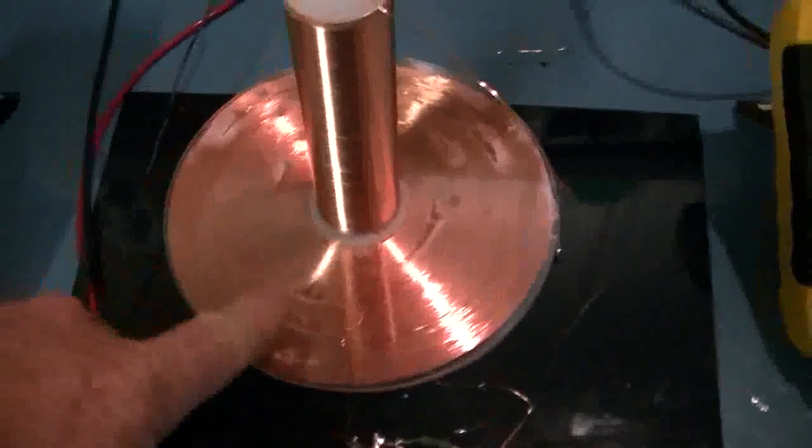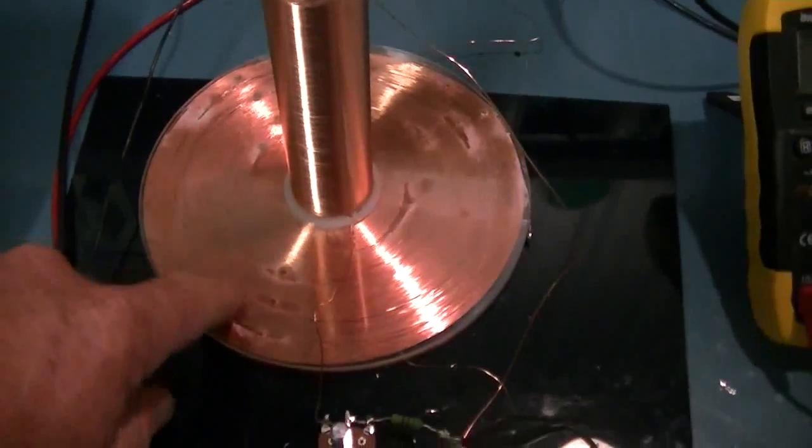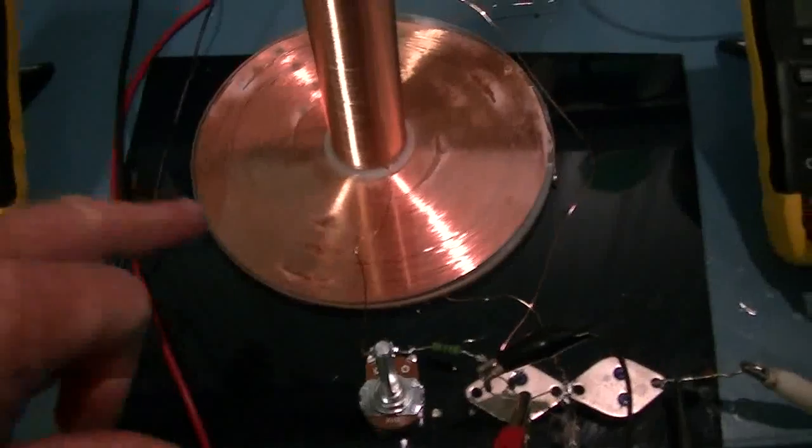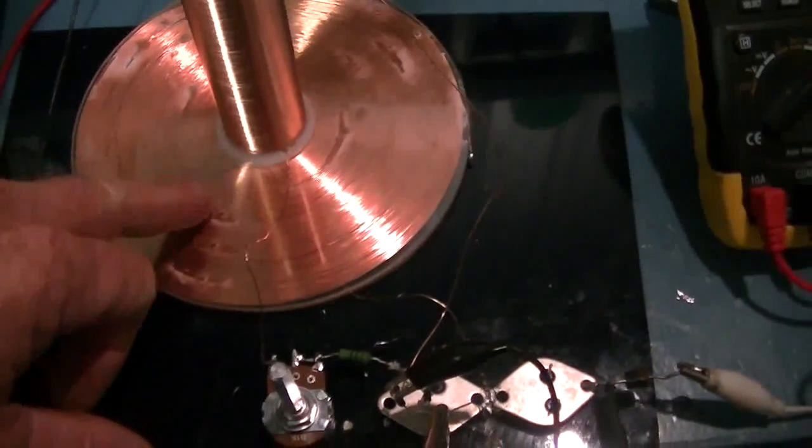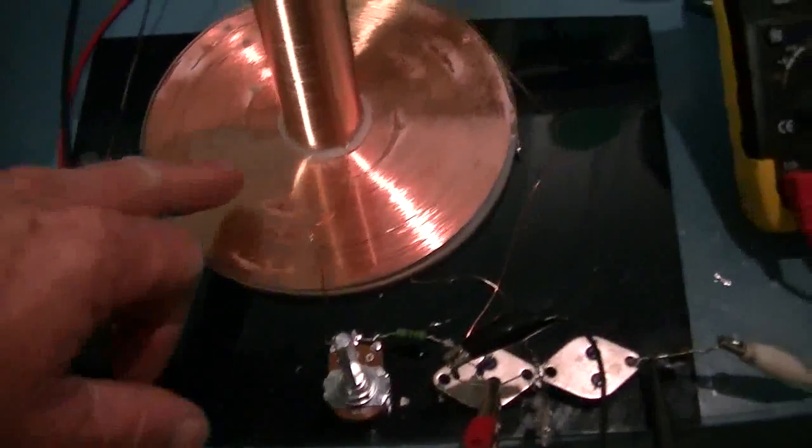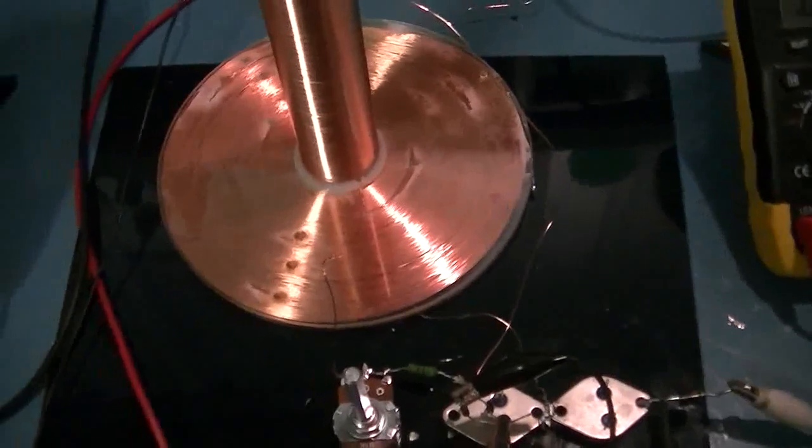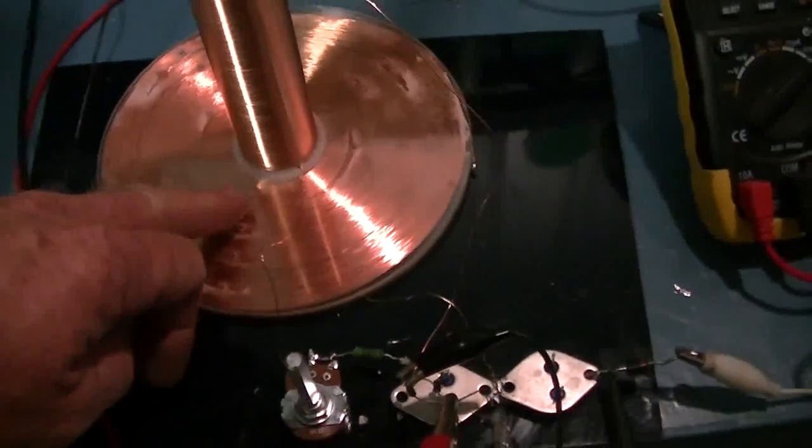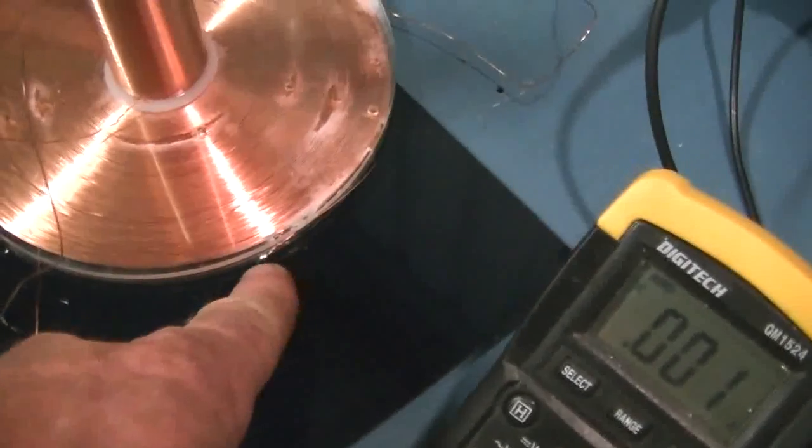Here we have the ever famous Tesla Bifilar Pancake Coil I wound. It's 180 layers or 180 wraps from center out. I wound two on at a time of course and then hooked them up in series.